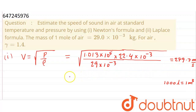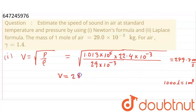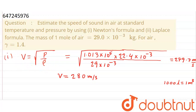So the speed of sound using Newton's formula comes out to V = 279.7 m/s. We can round this up — rounding 279.7 gives approximately 280 m/s. So the speed of sound using Newton's formula is 280 meters per second.